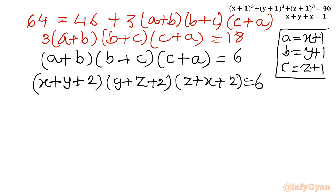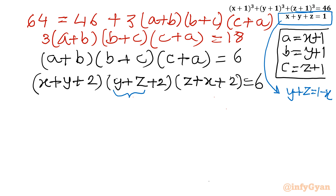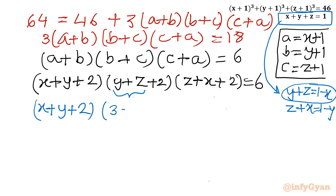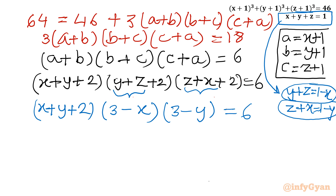Now I will use equation number 1, which is x plus y plus z equal to 1. From this equation I can write y plus z equal to 1 minus x, and z plus x equal to 1 minus y. Substituting these in, the equation becomes x plus y plus 2, times 3 minus x, times 3 minus y, equal to 6.